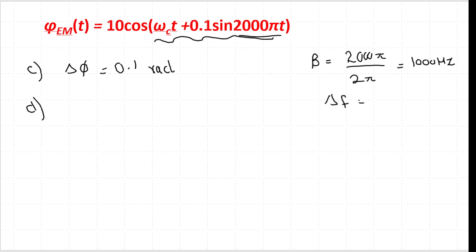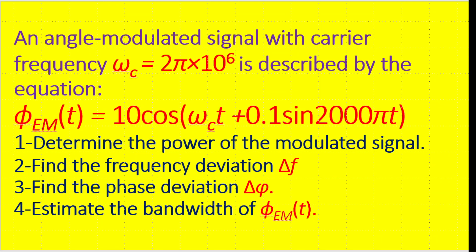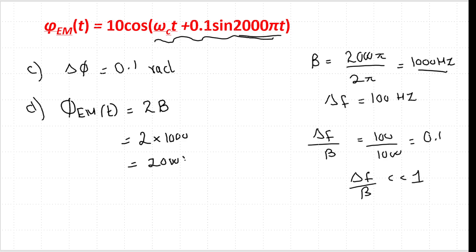We found the frequency deviation is 100 Hz. Checking Δf / B = 100 / 1000 = 0.1, which is much less than 1, so this is a narrow band signal. For narrow band FM, the bandwidth equals 2B = 2 × 1000 = 2000 Hz, or 2 kilohertz. This is the bandwidth of the angle modulated signal.